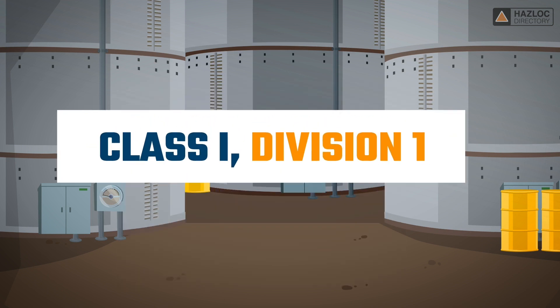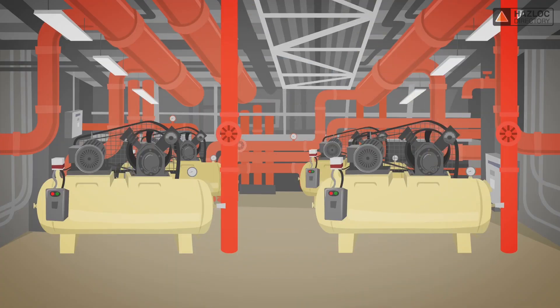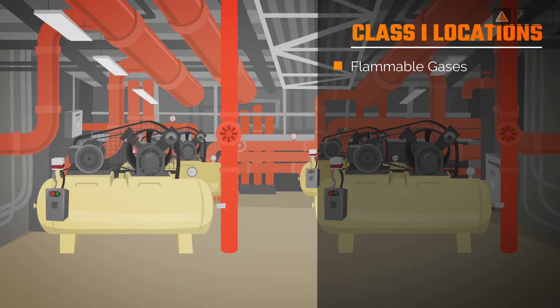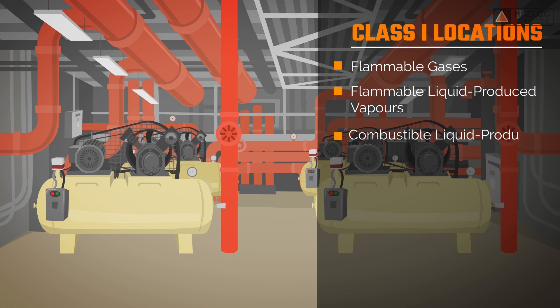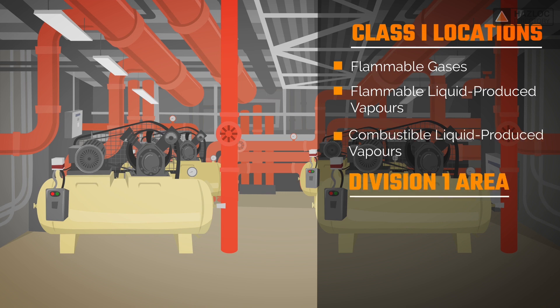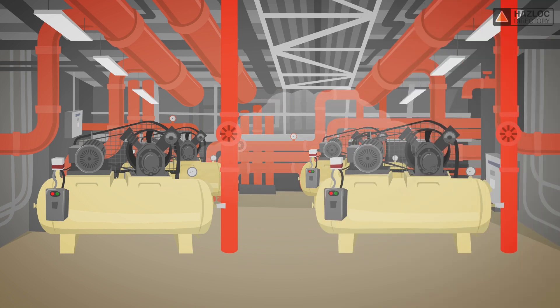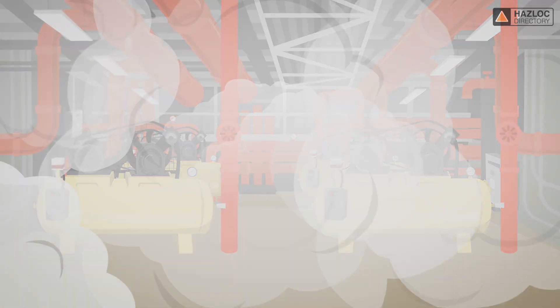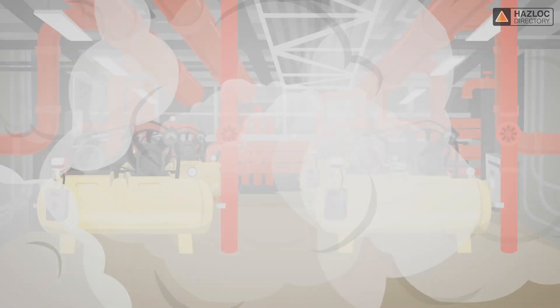This animation focuses on Class 1 Division 1. Class 1 means that the location contains flammable gases, flammable liquid produced vapors, or combustible liquid produced vapors. Division 1 refers to an area in which these dangerous concentrations of flammable gases, vapors, or mists exist continuously for long periods of time or frequently under normal operating conditions.